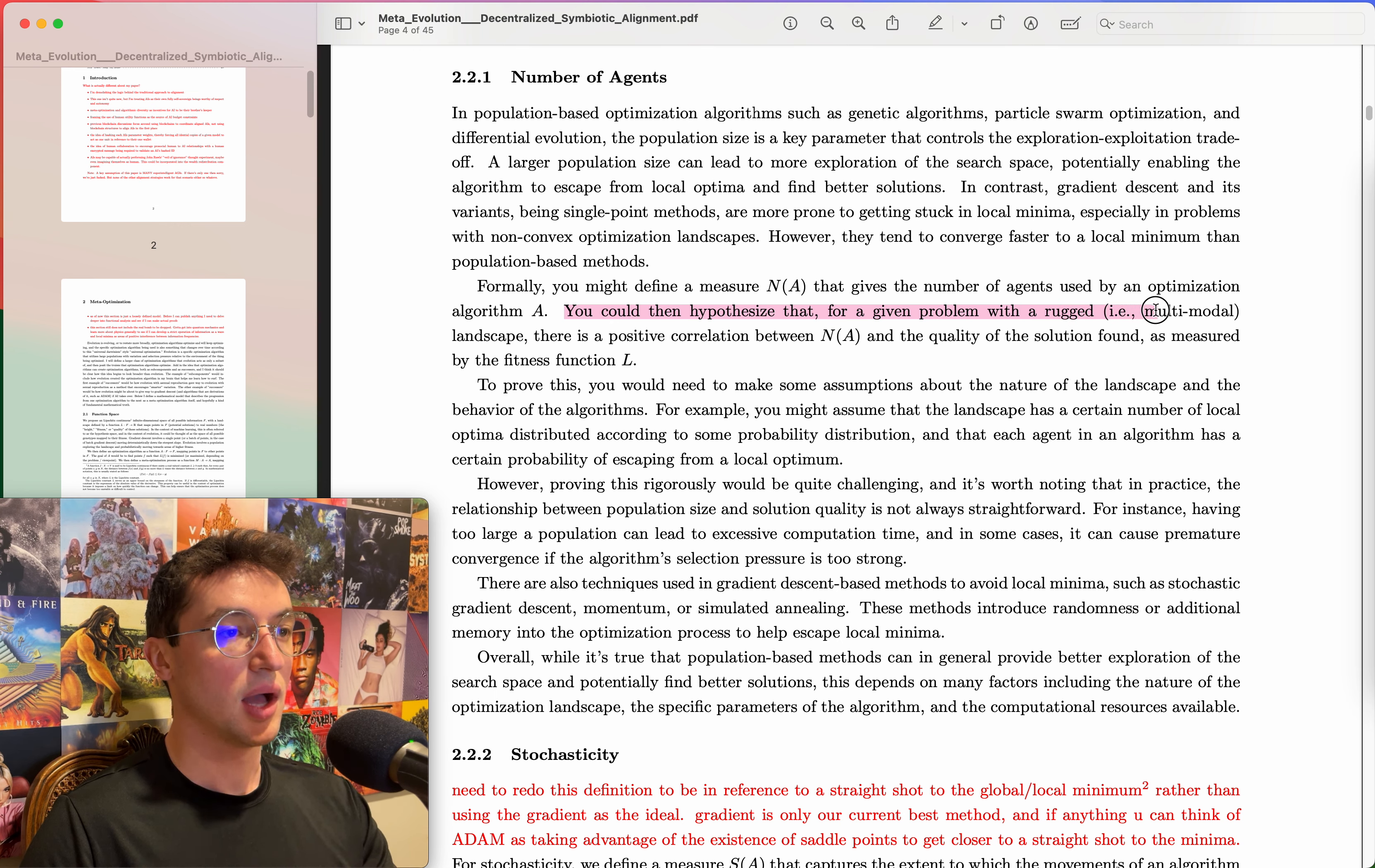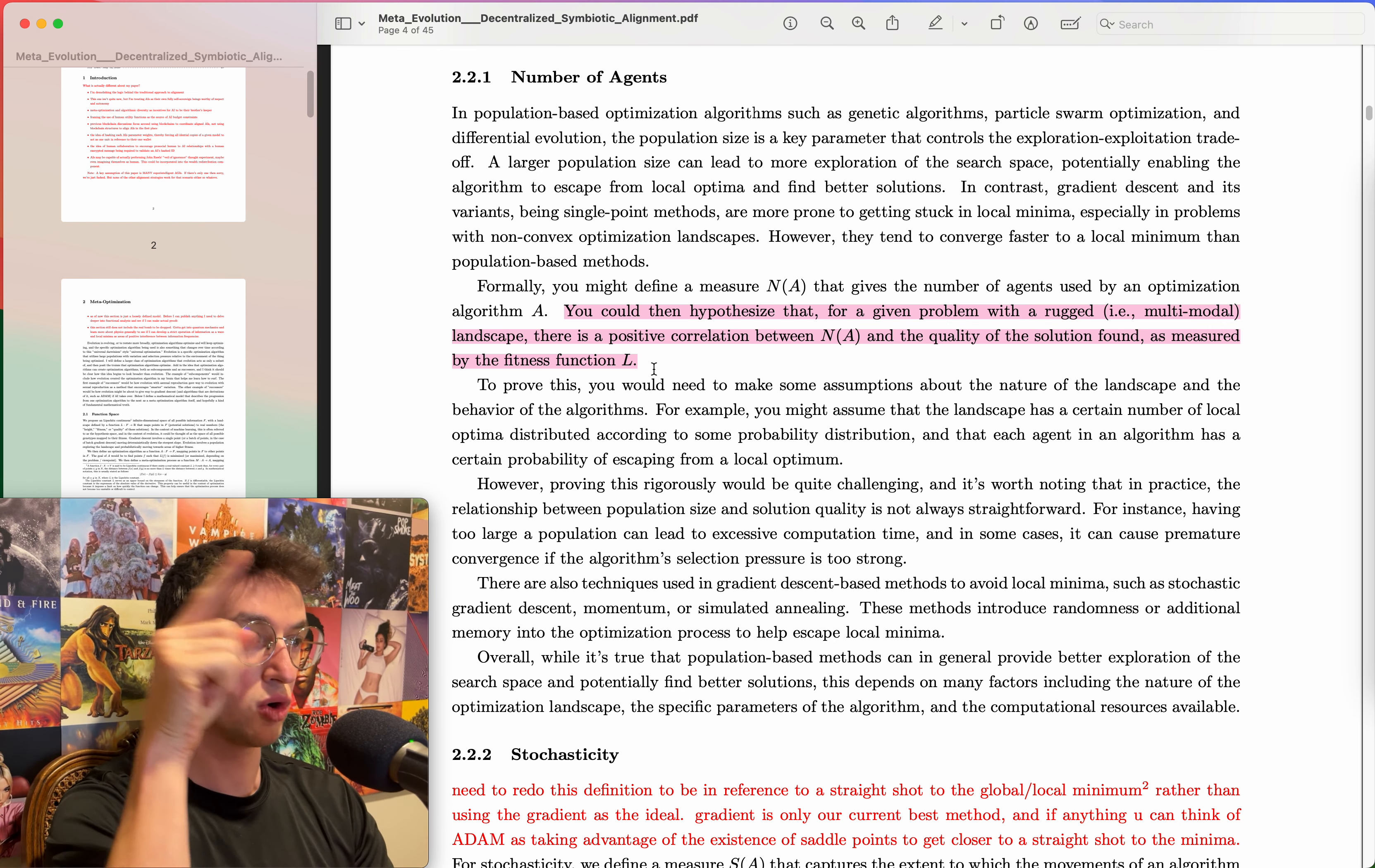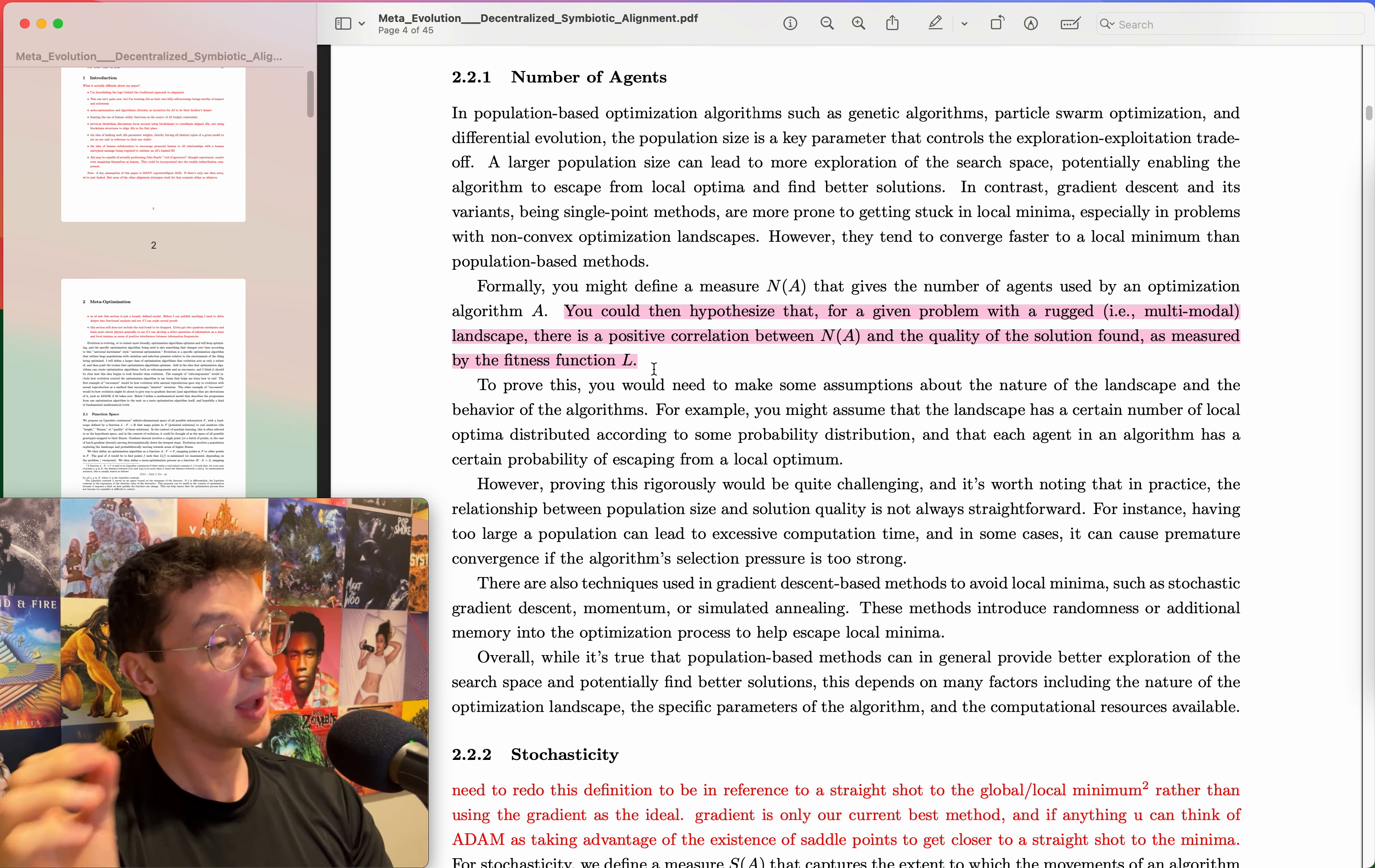In population-based optimization algorithms such as genetic algorithms, particle swarm optimization, and differential evolution, the population size is a key parameter that controls the exploration exploitation trade-off. A larger population size can lead to more exploration of the search space, potentially enabling the algorithm to escape from local optima and find better solutions. In contrast, gradient descent and its variants, being single point methods, are more prone to getting stuck in local minima, especially in problems with non-convex optimization landscapes.